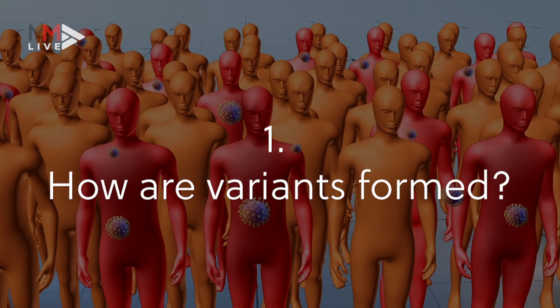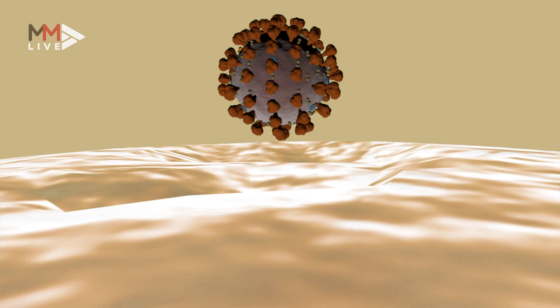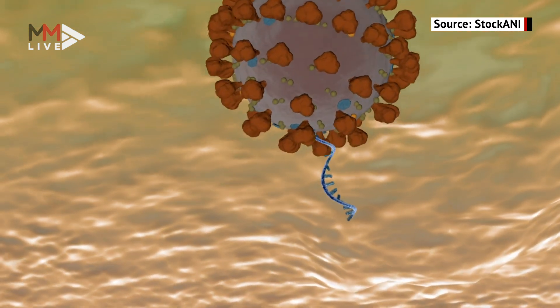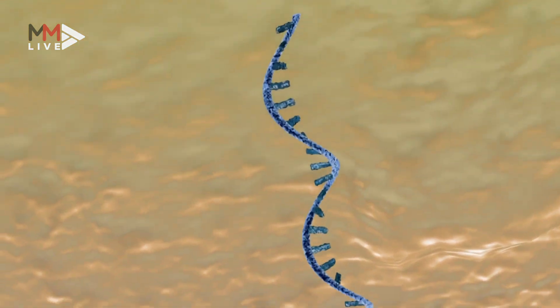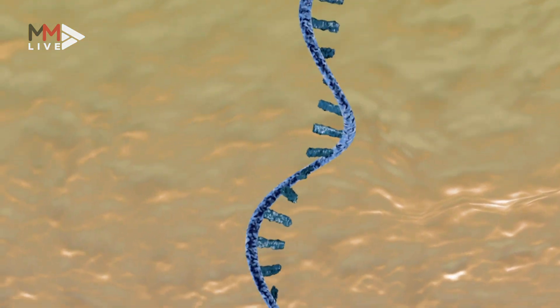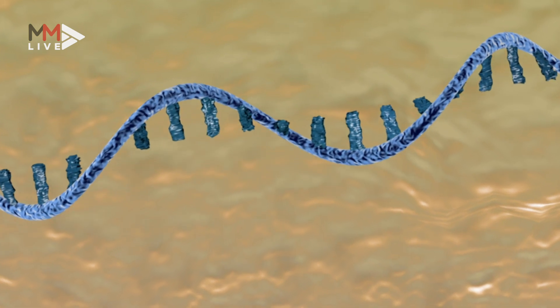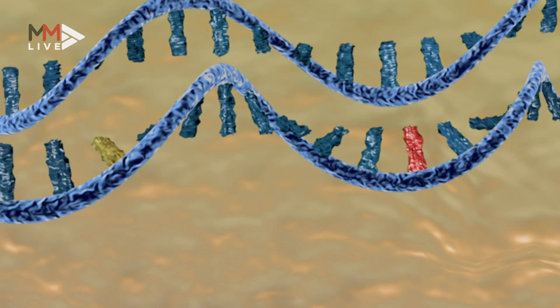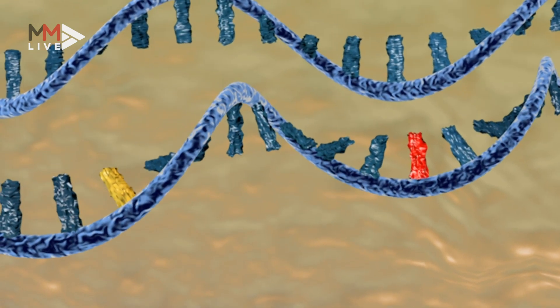All living matter, when it's replicating, when they're making copies of themselves, some errors occur and some changes occur. That's just part and parcel of how cells replicate. Mostly when those changes occur, they're minor and they make no difference, or sometimes they're disadvantageous, in which case those viruses will just die out.